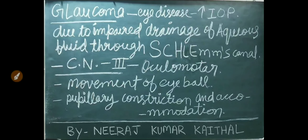Glaucoma is an eye disease in which intraocular pressure is increased. In glaucoma, intraocular pressure is increased due to impaired drainage of aqueous fluid through the Canal of Schlemm.